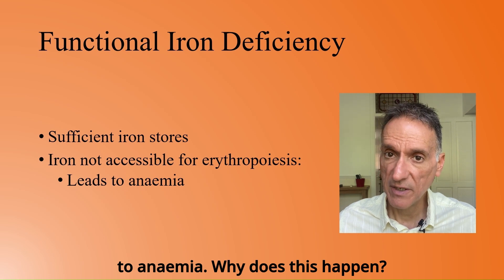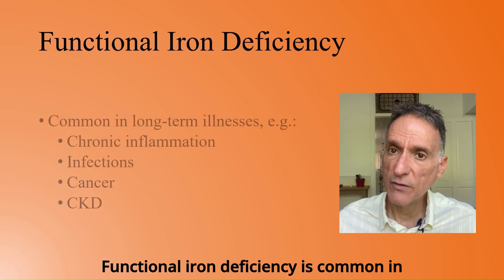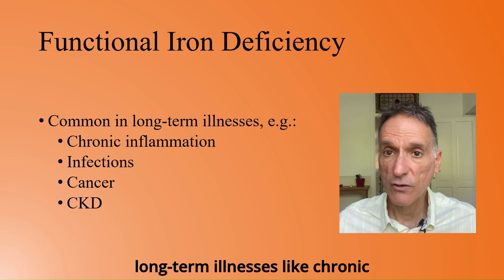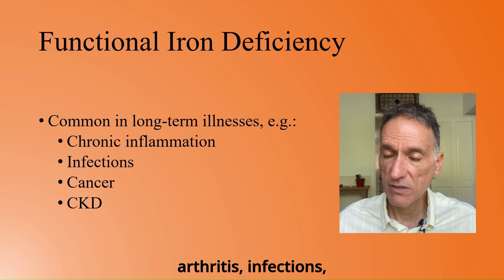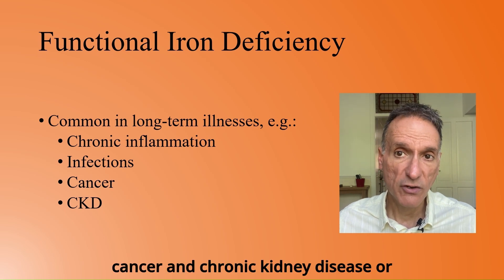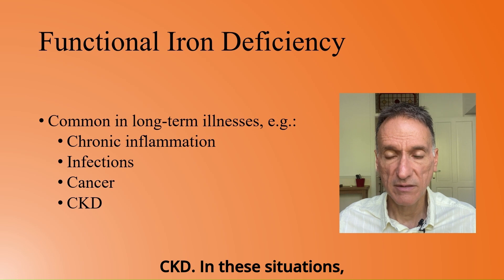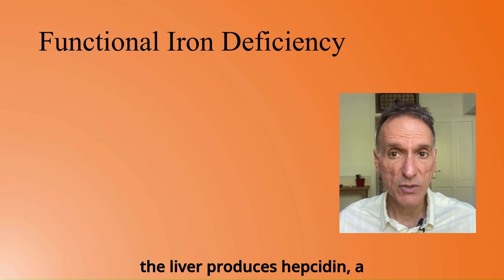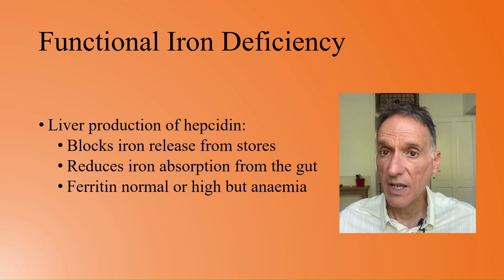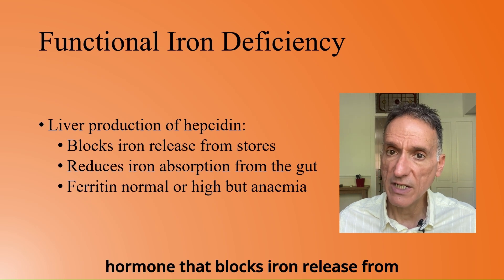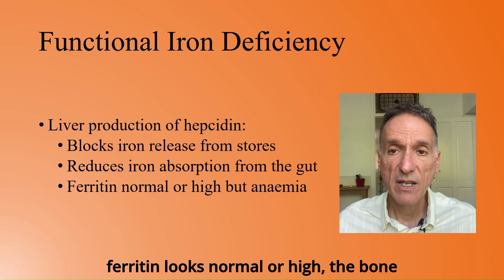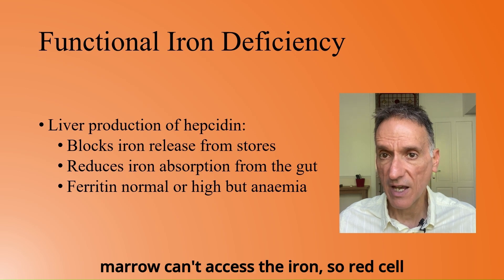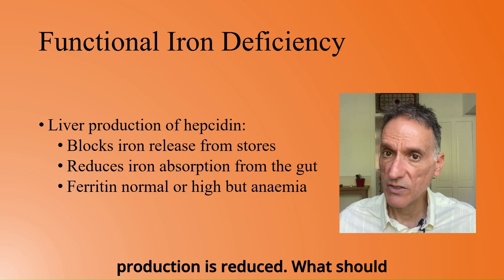Why does this happen? Functional iron deficiency is common in long-term illnesses like chronic inflammation, for example rheumatoid arthritis, infections, cancer and chronic kidney disease or CKD. In these situations, the liver produces hepcidin, a hormone that blocks iron release from stores and reduces absorption from the gut. So even if ferritin looks normal or high, the bone marrow can't access the iron, so red cell production is reduced.